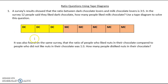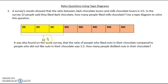I'm going to label my tape diagram so I know which segment corresponds with which. You can see I have DC, DC, DC — that's dark chocolate — and then MC five times, representing the milk chocolate. Now another piece of information I know is that 12 people like dark chocolate, so these 3 pieces represent 12 people.